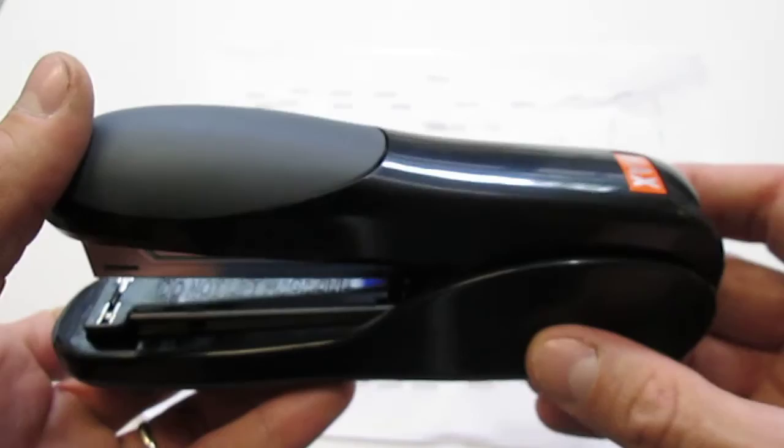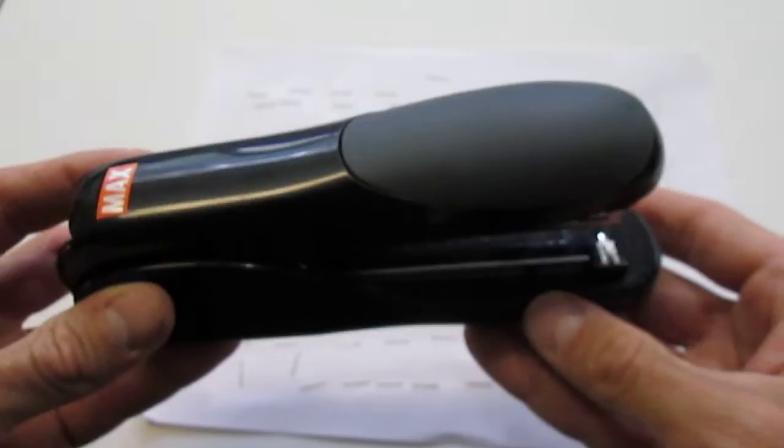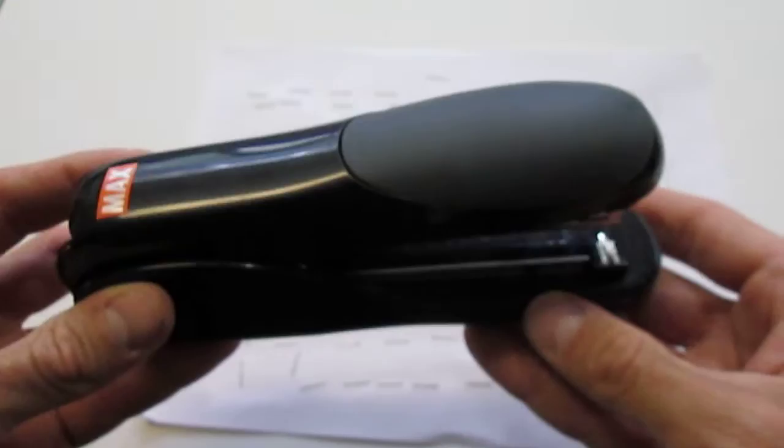This is the Max HD-50DF stapler. It doesn't jam. It staples up to 30 pages at a time. And it is available at It Works Office Products.